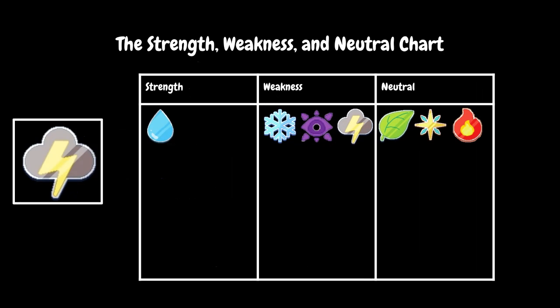It's Storm. Its Strength is Water. Its Weakness is Ice, Shadow, and itself. And it's Neutral against Plant, Astral, and Fire.